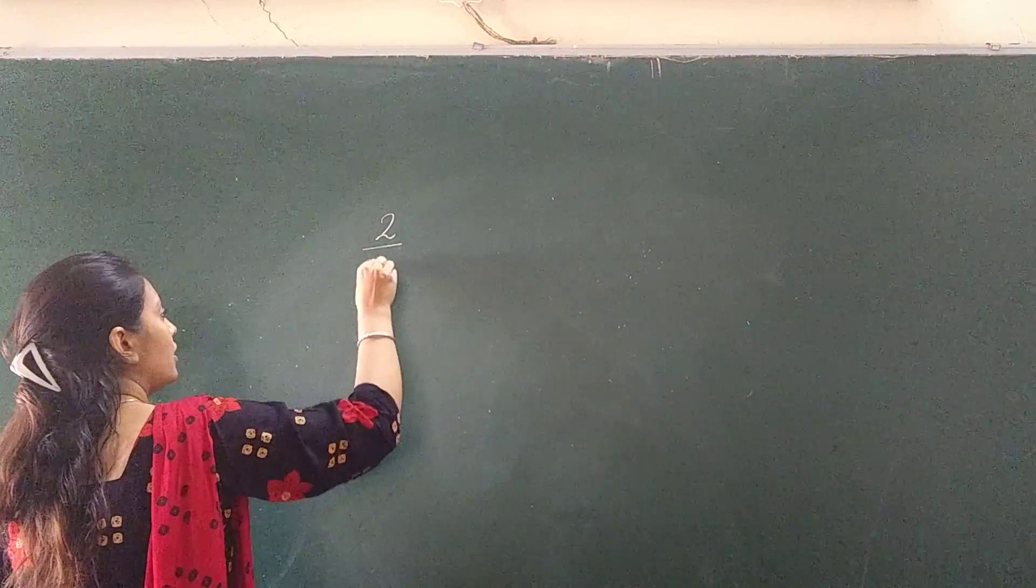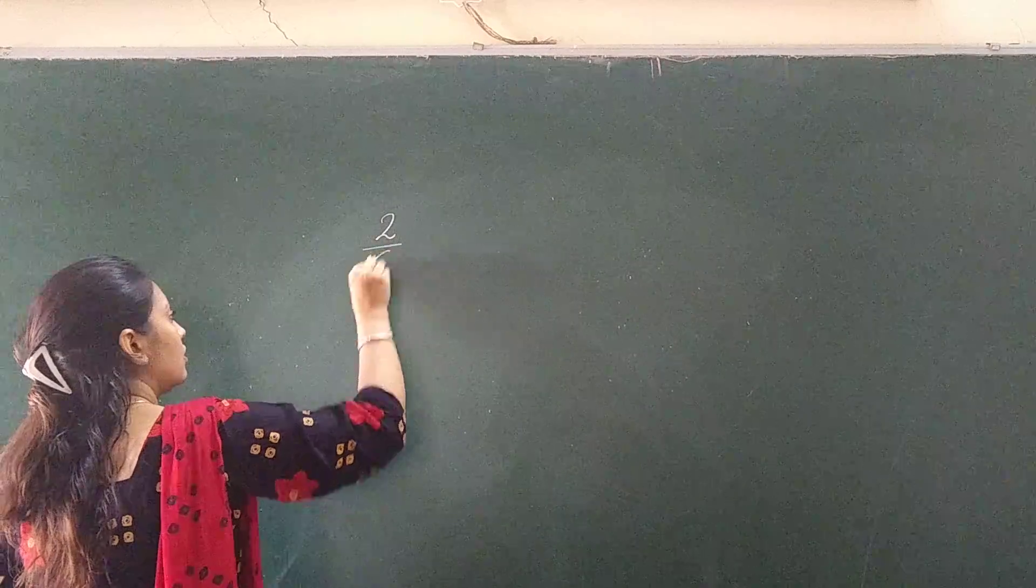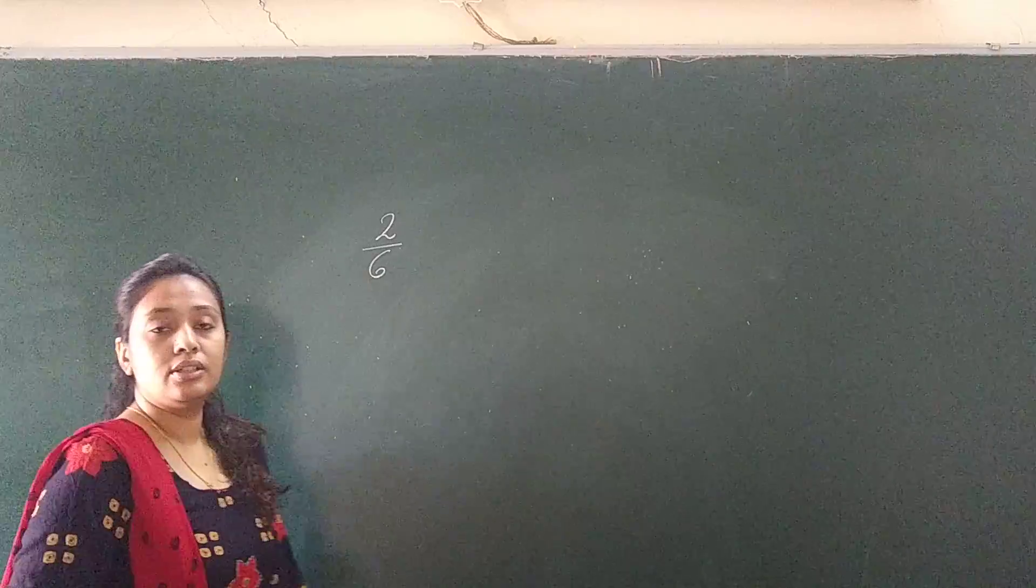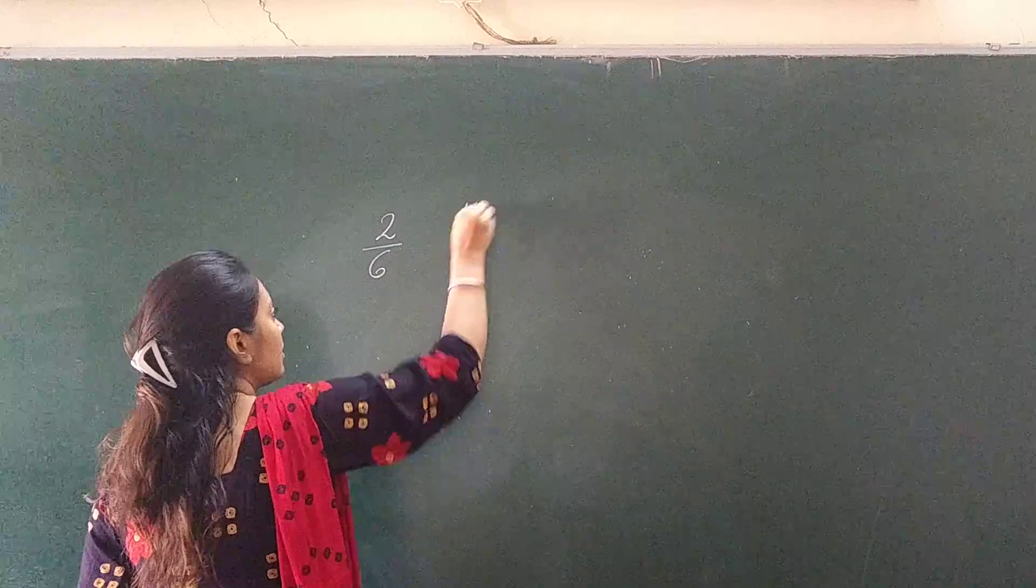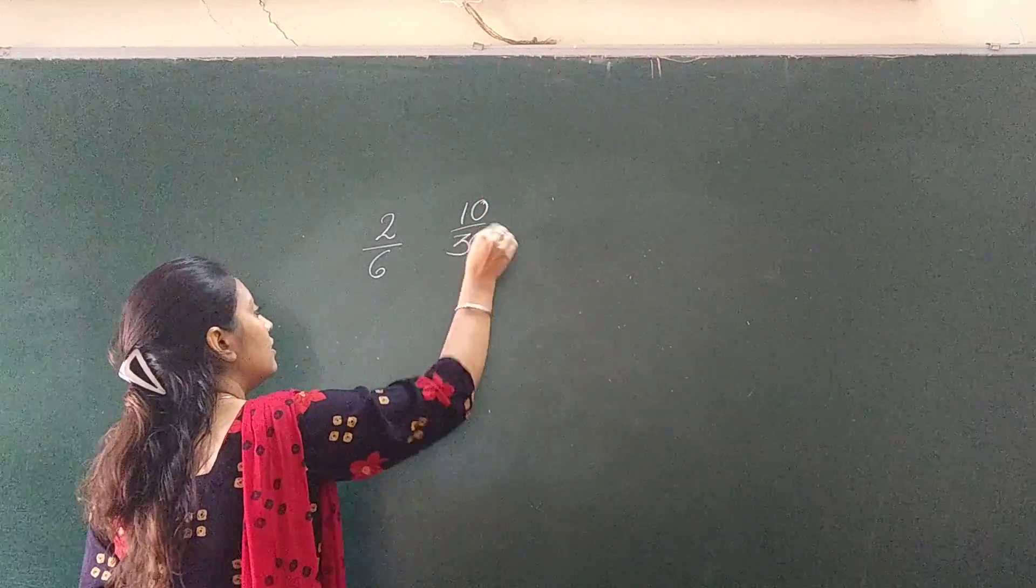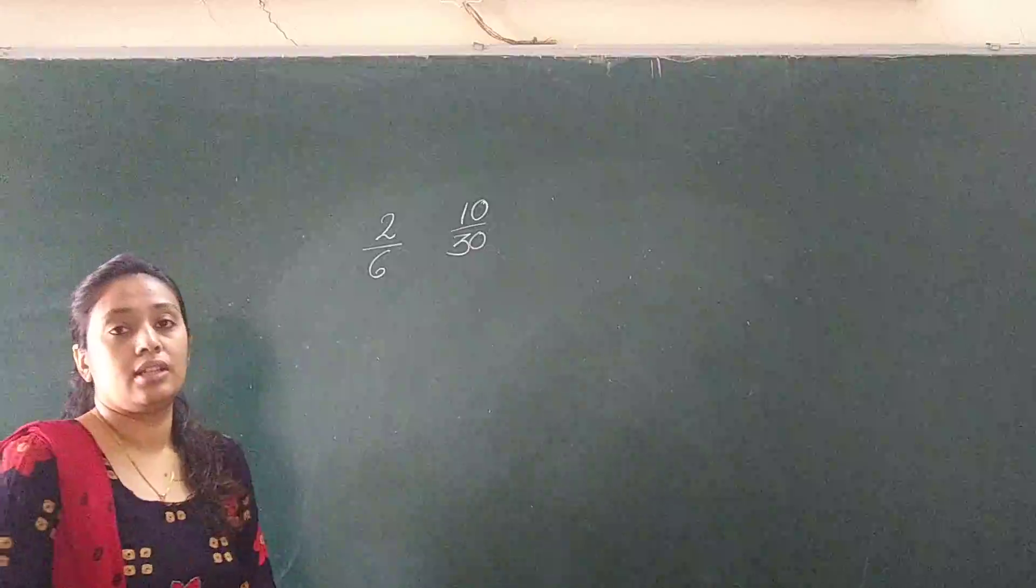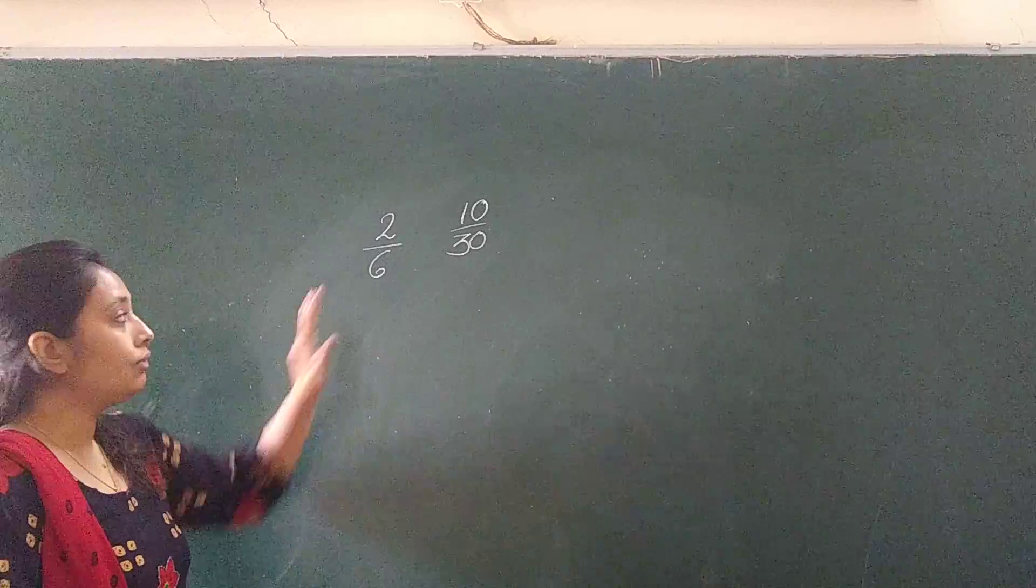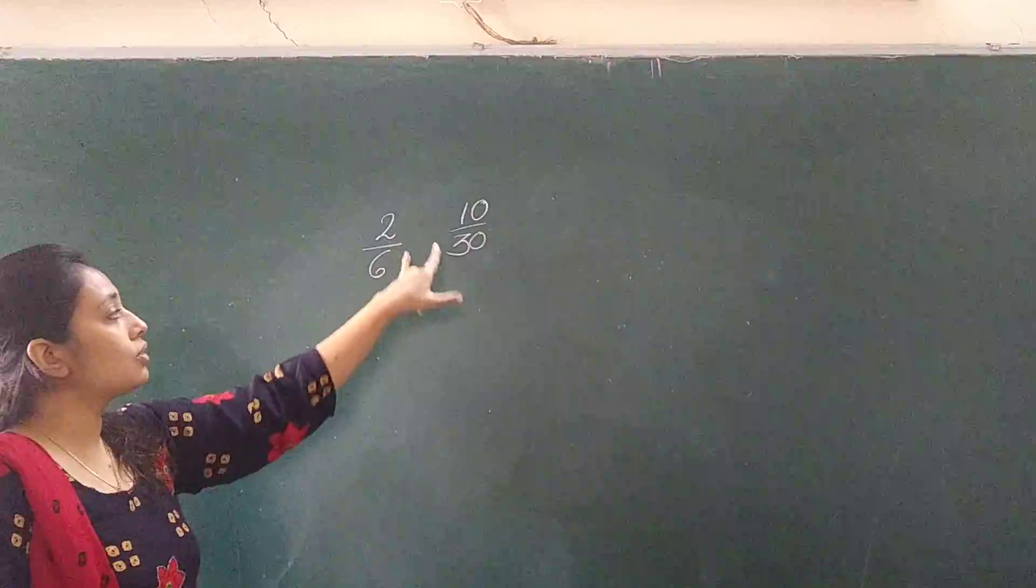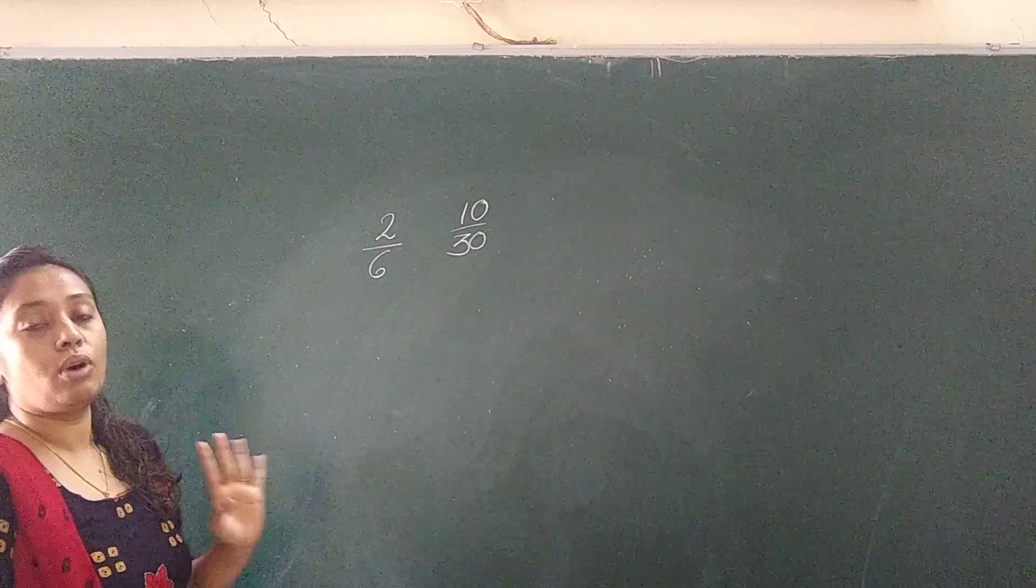Say for example, one of the fractions is 2 upon 6, and the other one is 10 upon 30. Now, what we have to check? Are these two fractions equivalent or not? Let me check it.